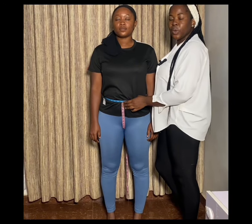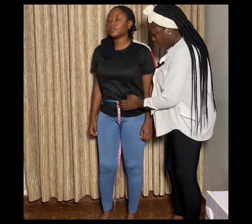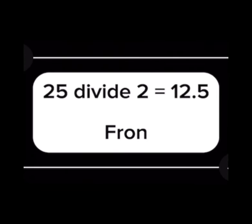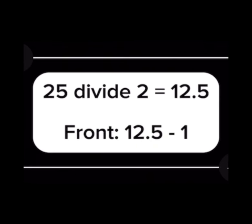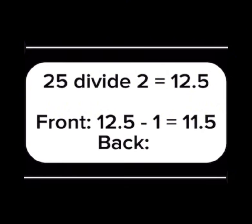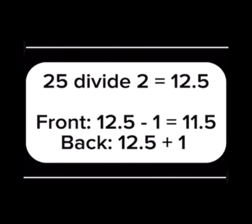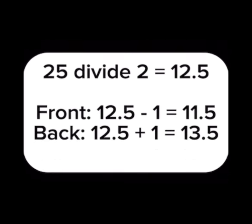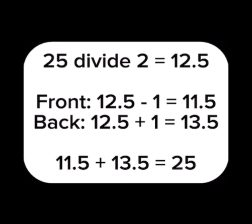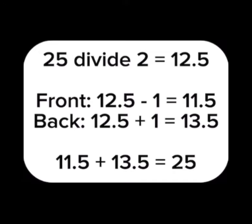To calculate from your crotch length: after measuring front to back we had a total of 25 inches. Divide that by two, which equals 12.5 inches. For the front crotch measurement, take 12.5 and subtract one inch, making it 11.5 inches. For the back crotch measurement, take 12.5 and add one inch, making it 13.5 inches. Adding 11.5 plus 13.5 gives back 25 inches. This gives two inches more to the back of the body than the front.